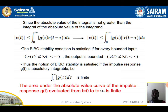C(t) is less than or equal to the integration from 0 to infinity of the magnitude of G(tau) into the magnitude of R(t minus tau) d-tau. The BIBO stability condition is satisfied if for every bounded input, the impulse response g(t) is absolutely integrable, i.e., the integration from 0 to infinity of g(tau) d-tau is finite. The area under the absolute value curve of the impulse response g(t) evaluated from t=0 to t=infinity is finite.